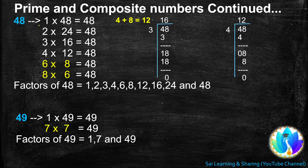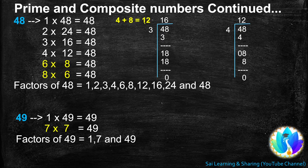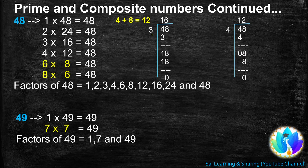Next, 48. 1 is a factor of every number, so 1s are 48, 48. 48 is a multiple of 2: 2s are 24, 48. 48 is a multiple of 3. When we add the digits of 48, we get 12 — 4 plus 8 is 12. 12 is a multiple of 3. So, when we divide 48 by 3, we get quotient 16. 16 is another factor of 48. So, 3s are 16, 48.